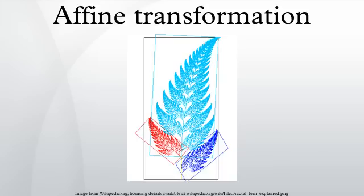In the matrix representation, the inverse is similarly structured. The invertible affine transformations form the affine group, which has the general linear group of degree n as a subgroup and is itself a subgroup of the general linear group of degree n+1. The similarity transformations form the subgroup where A is a scalar times an orthogonal matrix. For example, if the affine transformation acts on the plane and the determinant of A is 1 or -1, the transformation is an equi-areal mapping. Such transformations form a subgroup called the equi-affine group. A transformation that is both equi-affine and a similarity is an isometry of the plane with Euclidean distance. Each of these groups has a subgroup of transformations which preserve orientation, those where the determinant of A is positive. In 3D, this is the group of rigid body motions. If there is a fixed point, we can take that as the origin, and the affine transformation reduces to a linear transformation.